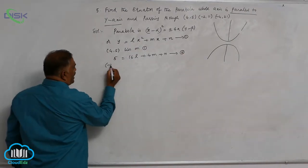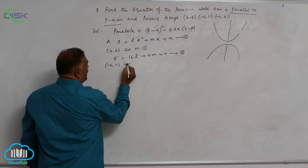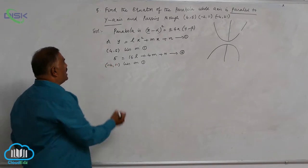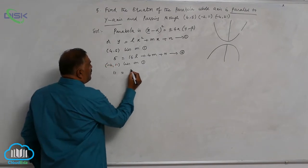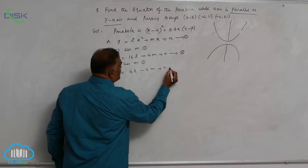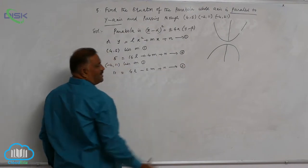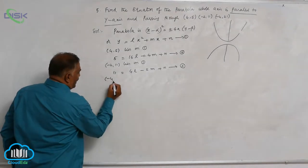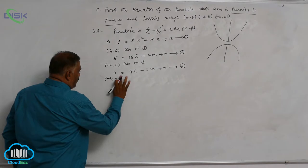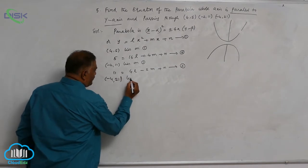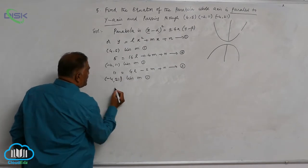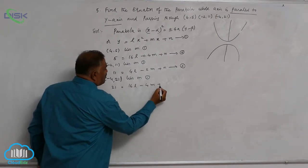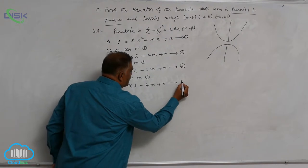Then the point (-2, 11) lies on equation 1. So 11 equals 4l minus 2m plus n — call this equation 3. The third point (-4, 21) also lies on equation 1, giving 21 equals 16l minus 4m plus n — call this equation 4.